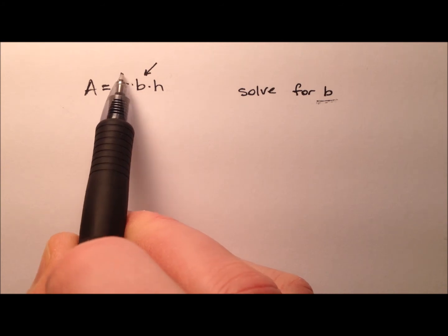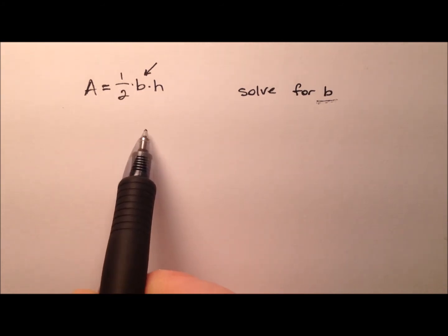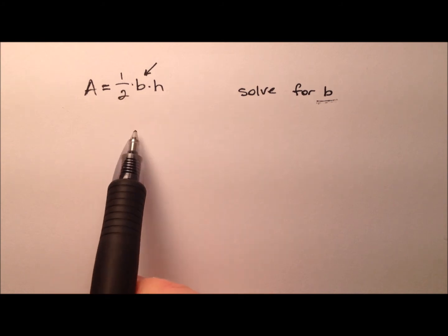When you multiply something by one-half, the inverse operation, or the opposite of that, is dividing by one-half.